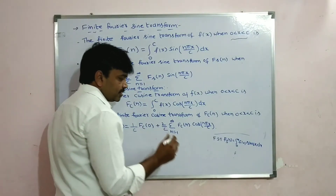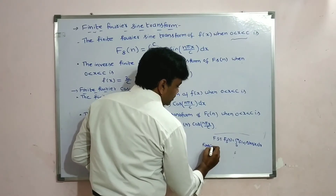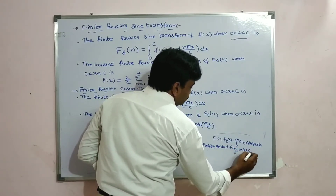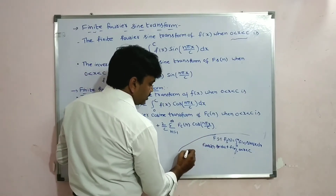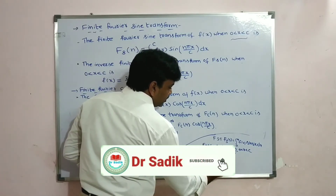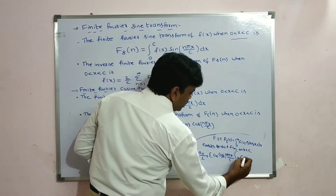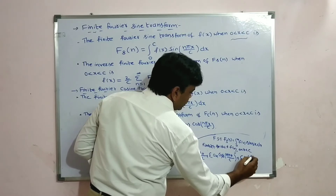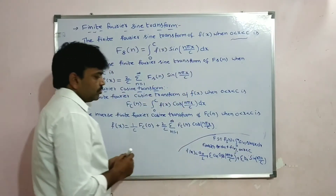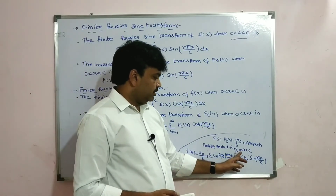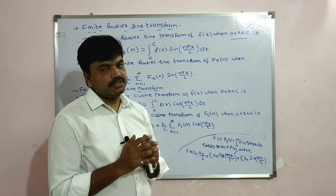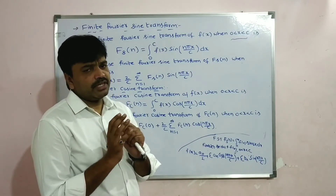You can connect this to what you learned in Fourier series. The Fourier series of f(x) in the interval 0 < x < c is: f(x) = a₀/2 + Σ aₙ cos(n·π·x/c) + Σ bₙ sin(n·π·x/c). Whenever the interval is 0 < x < c, we get n·π·x/c — that's how you can easily remember.